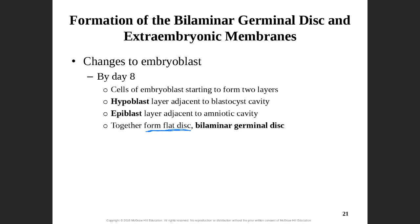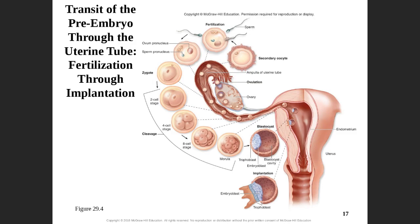Our embryoblast is this glob of cells that is now going to start to differentiate into two layers. The outer layer is the hypoblast, and the lower layer is the epiblast. So we talked about what goes on with those layers.